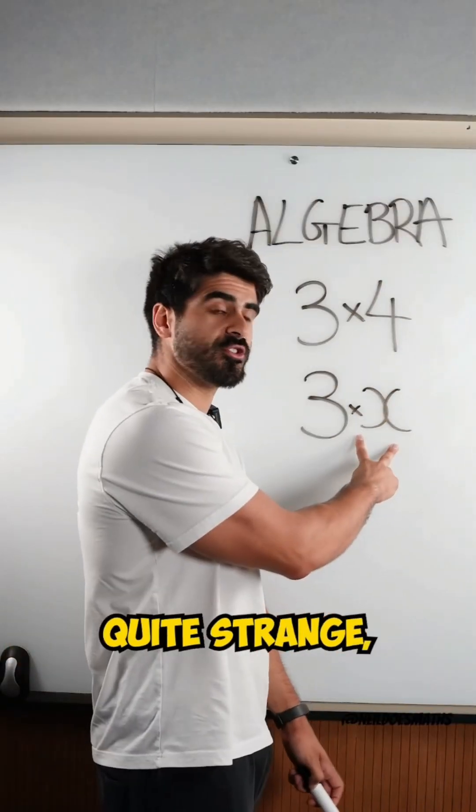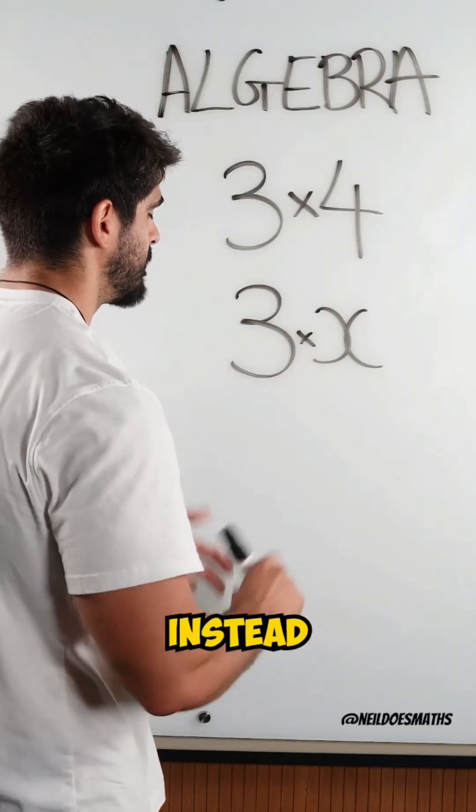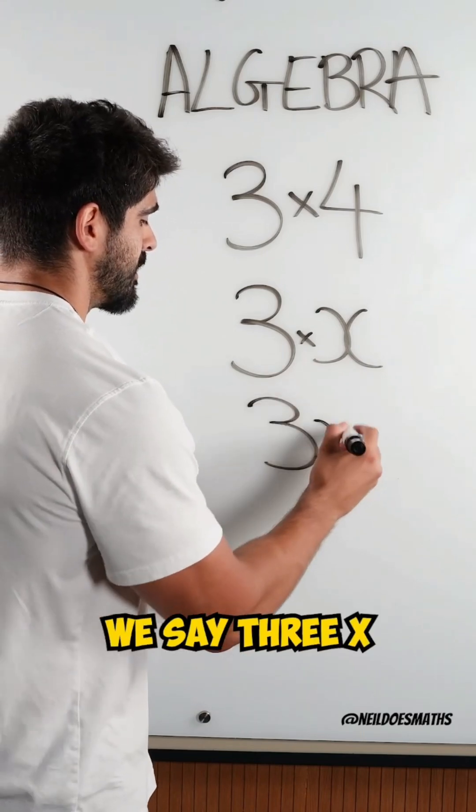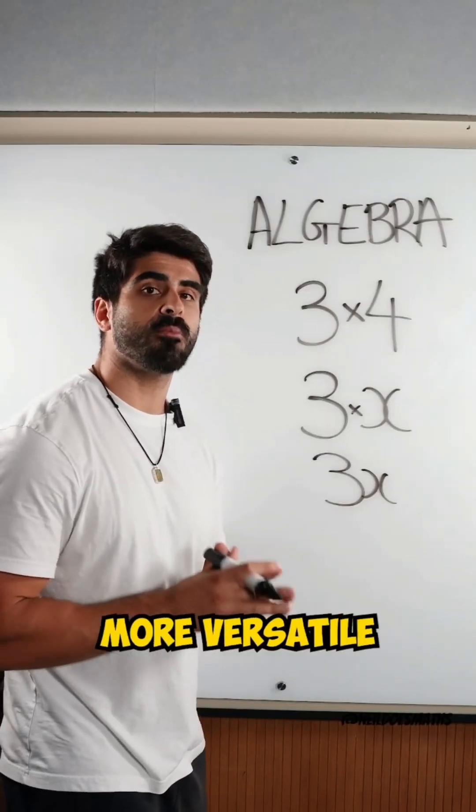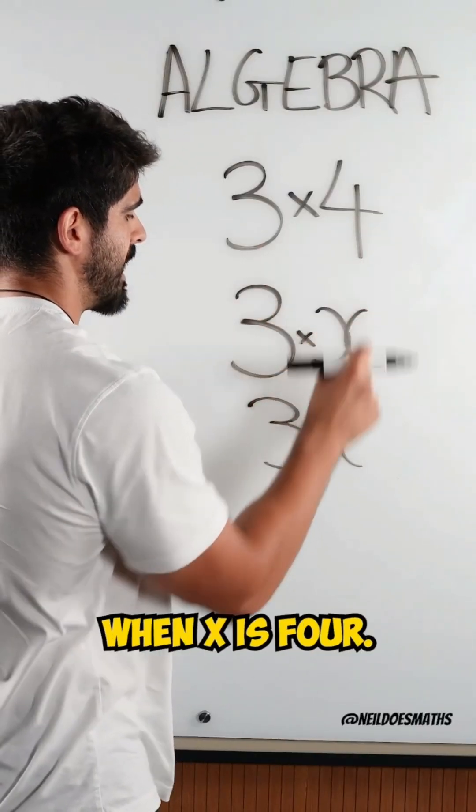Now this looks quite strange, right? We don't like to use the multiplication symbol when dealing with algebra. Instead we say 3x. And actually this statement is a lot more versatile because this is specific to 3 times 4, when x is 4.